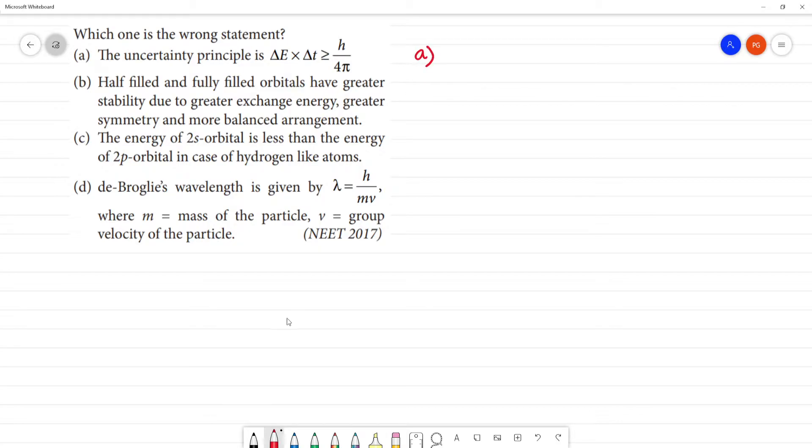First one. First one resembles the Heisenberg uncertainty principle. So, delta x times delta p is greater than or equal to h over 4 pi. So, that resembles the energy and time cannot be determined simultaneously. This is a true statement.